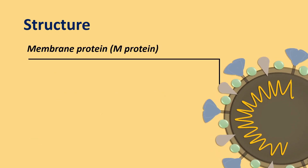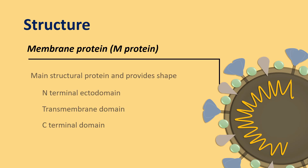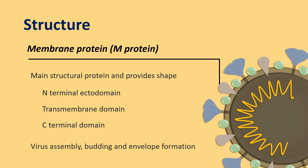The membrane protein, or M protein, is the main structural protein and provides shape to the virus. It has an N-terminal ectodomain, a transmembrane domain, and a C-terminal domain. It helps in viral assembly, budding, and envelope formation.